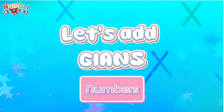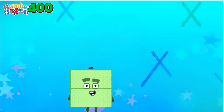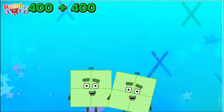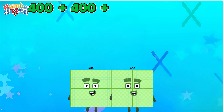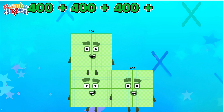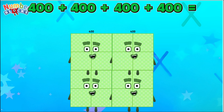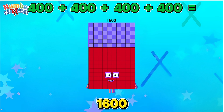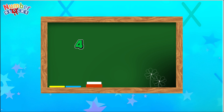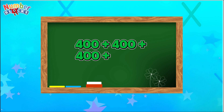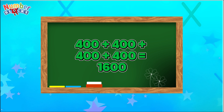Let's add giant numbers. 400 plus 400 plus 400 plus 400 is equals to 1,600.